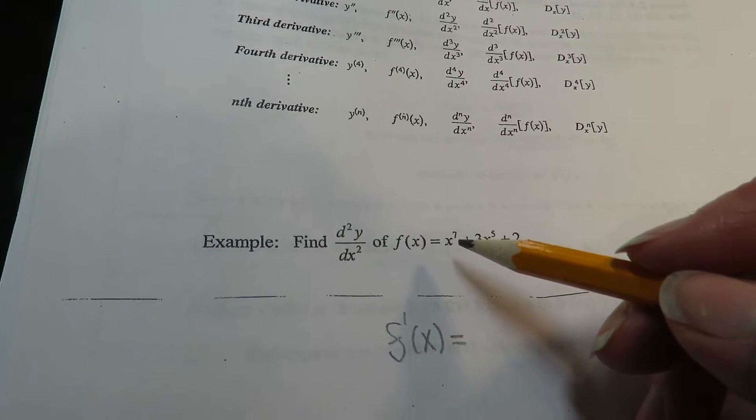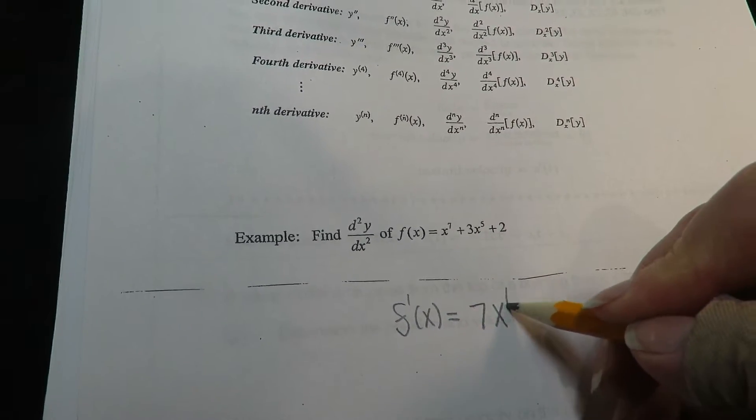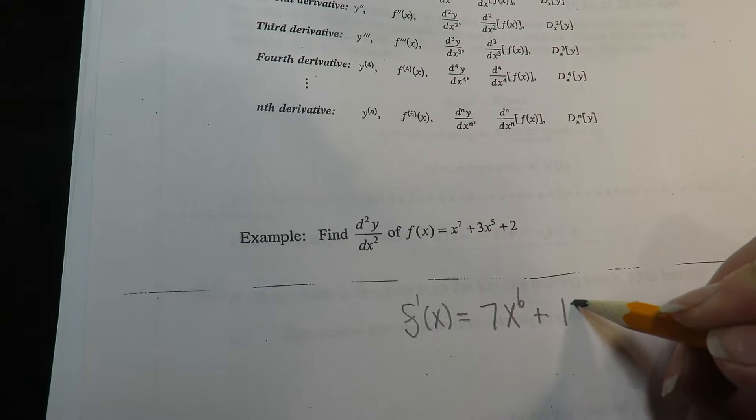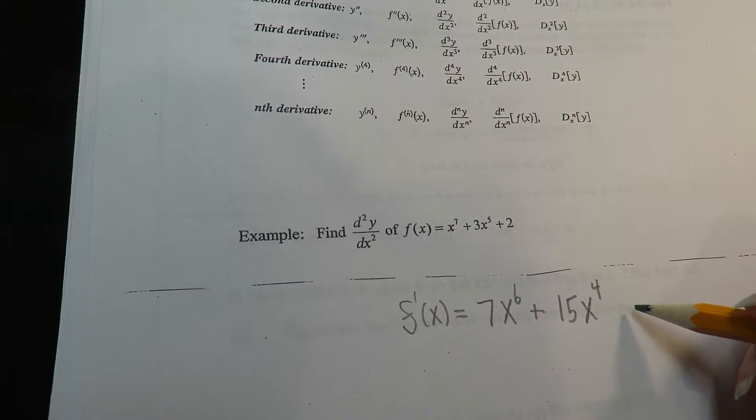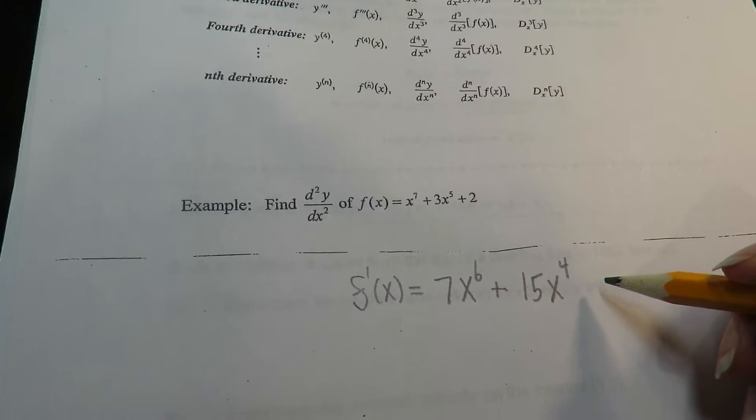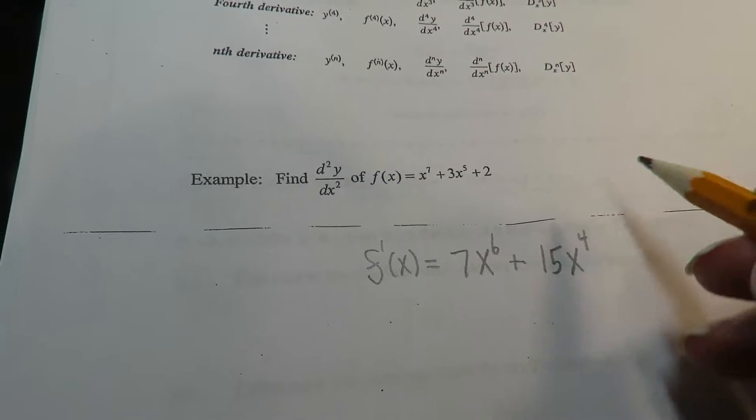Let's go ahead and find the first derivative using the power rule: 7x^6 - 15x^4, and then the derivative for 2 is a constant so the derivative goes to 0. So this is the first derivative.